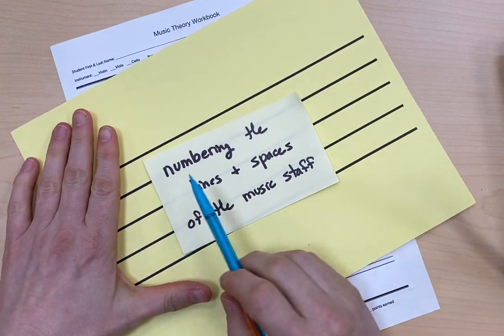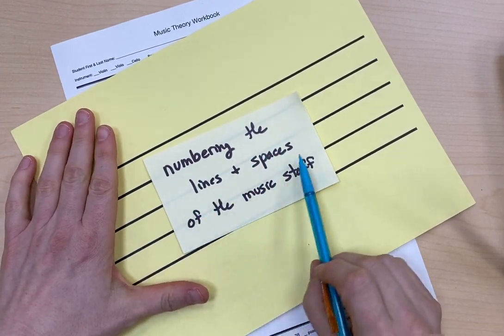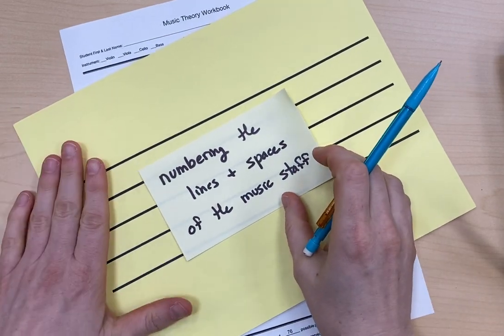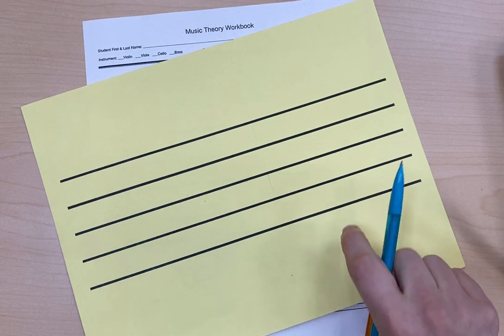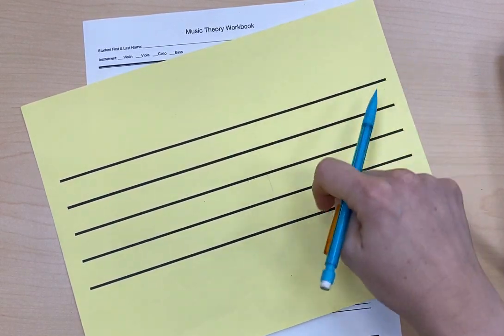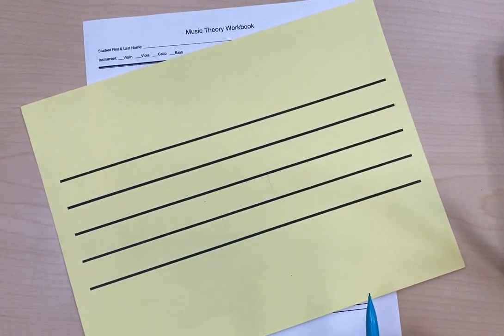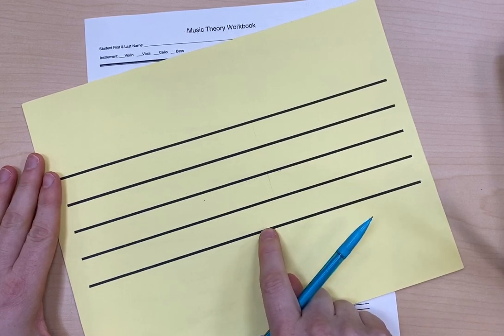All right, now we are going to be learning how to number the lines and spaces of the music staff. So we remember that our music staff has five lines, which make up four spaces. And when we number those lines, we always start at the bottom.